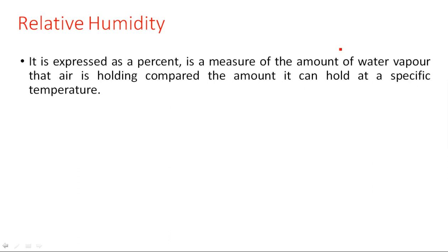For relative humidity, we calculate the humidity with respect to temperature — whether it is 30, 40, or 50 degrees. With respect to temperature we calculate the humidity in the environment or atmosphere, and that is relative humidity. It is expressed as a percentage: for example, 50 percent or 60 percent humidity.